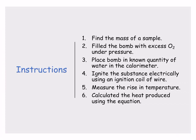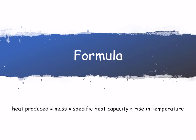The equation used is: heat produced equals mass times specific heat capacity times rise in temperature. So the formula is: Q = m × c × ΔT, where Q is the heat produced, m is mass, c is specific heat capacity, and ΔT is the rise in temperature.